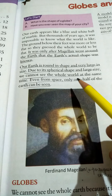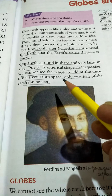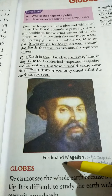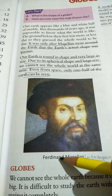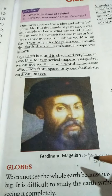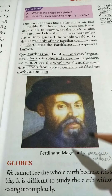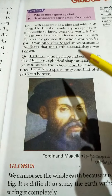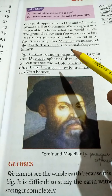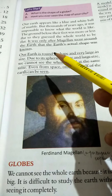Only one half of the earth can be seen. In the picture, we can see Ferdinand Magellan, who was a Portuguese explorer, who went round the earth, and through this the earth's actual shape was known.